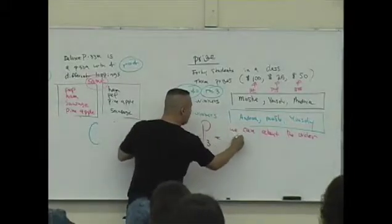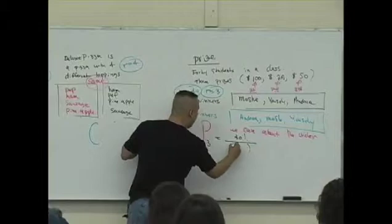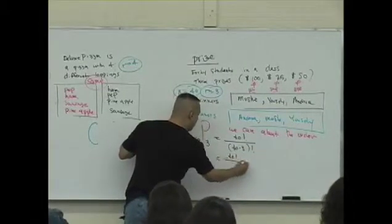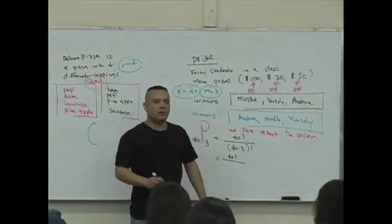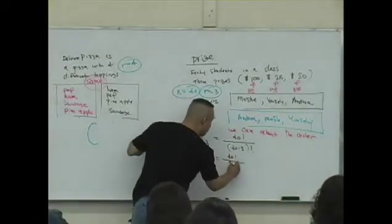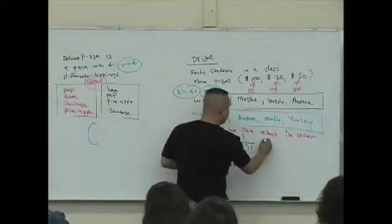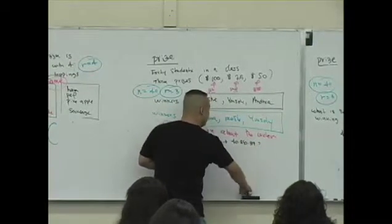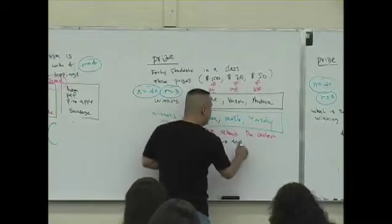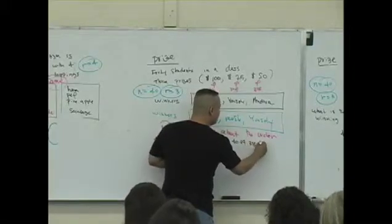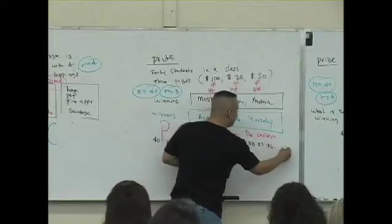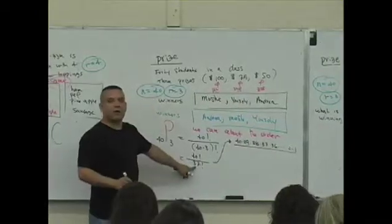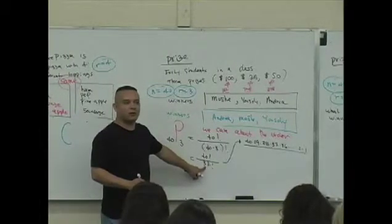Similarly, what about the permutation? 40P3. What is that by definition? 40P3 is 40 factorial over 40 minus 3 factorial. So, 40 factorial over, what's 40 minus 3? So, this is over 37 factorial. So, let's write this down. What is this? 40 times 38 times 39 times, sorry. 40 times what? 39 times 38 times 37 times 36 all the way down to 2 times 1.